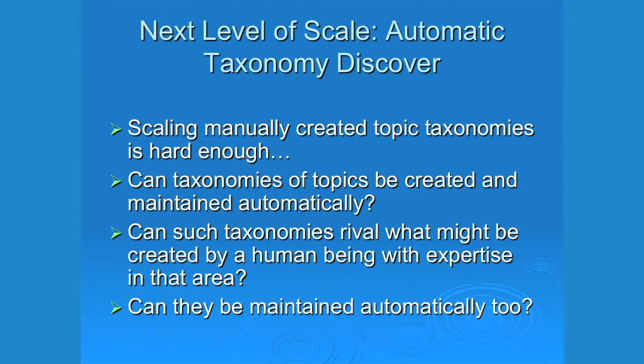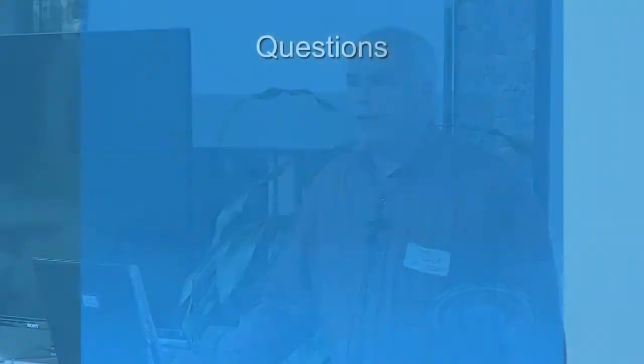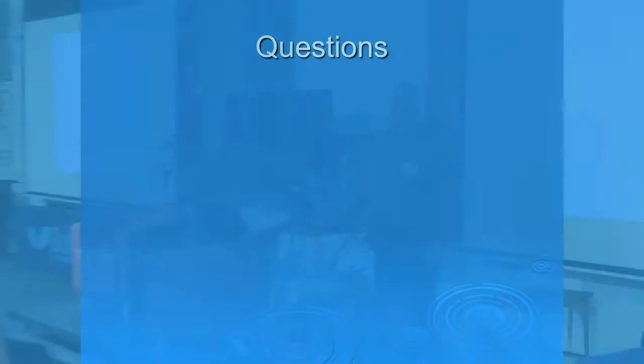Another aspect of scale sometimes asked about is whether the system can discover topics by itself — essentially automatic taxonomy discovery. It currently does not do that; that would be great but it's a hard problem in itself. It's another aspect of scale that TopicScout does not currently do.